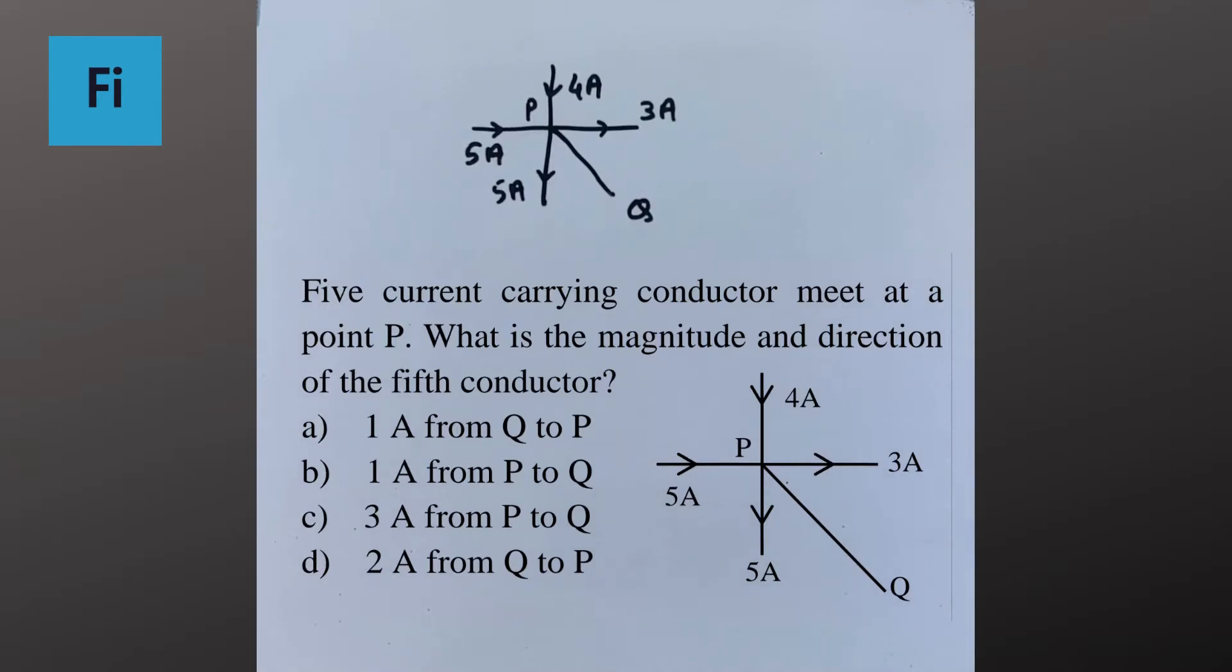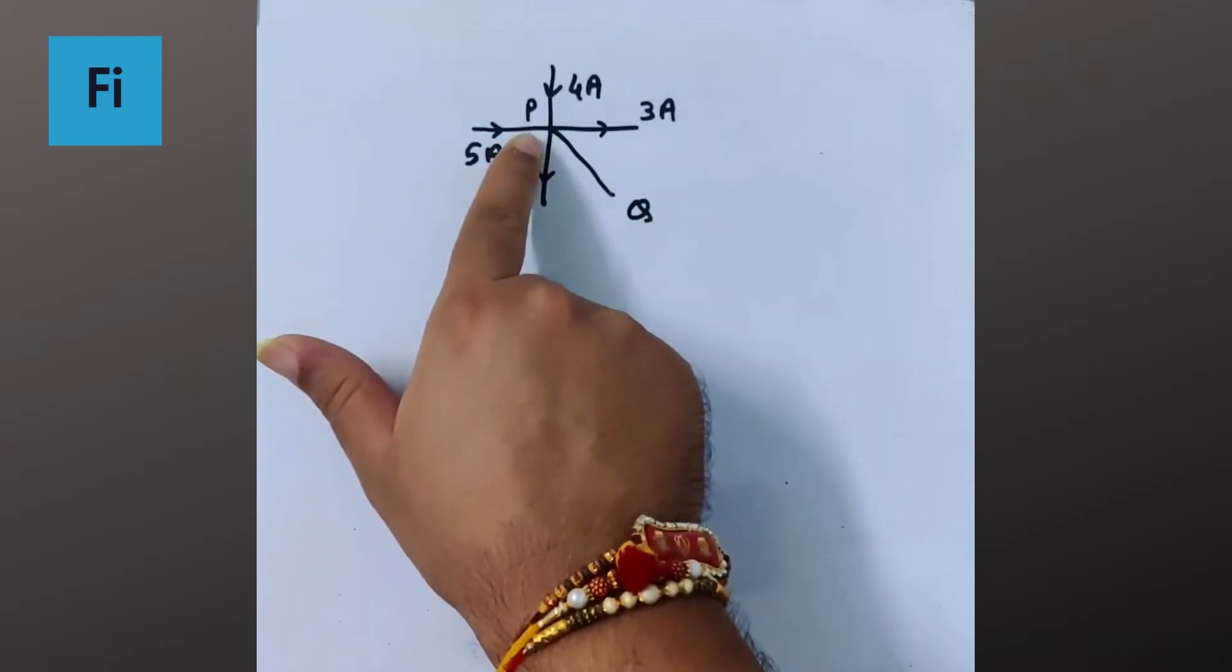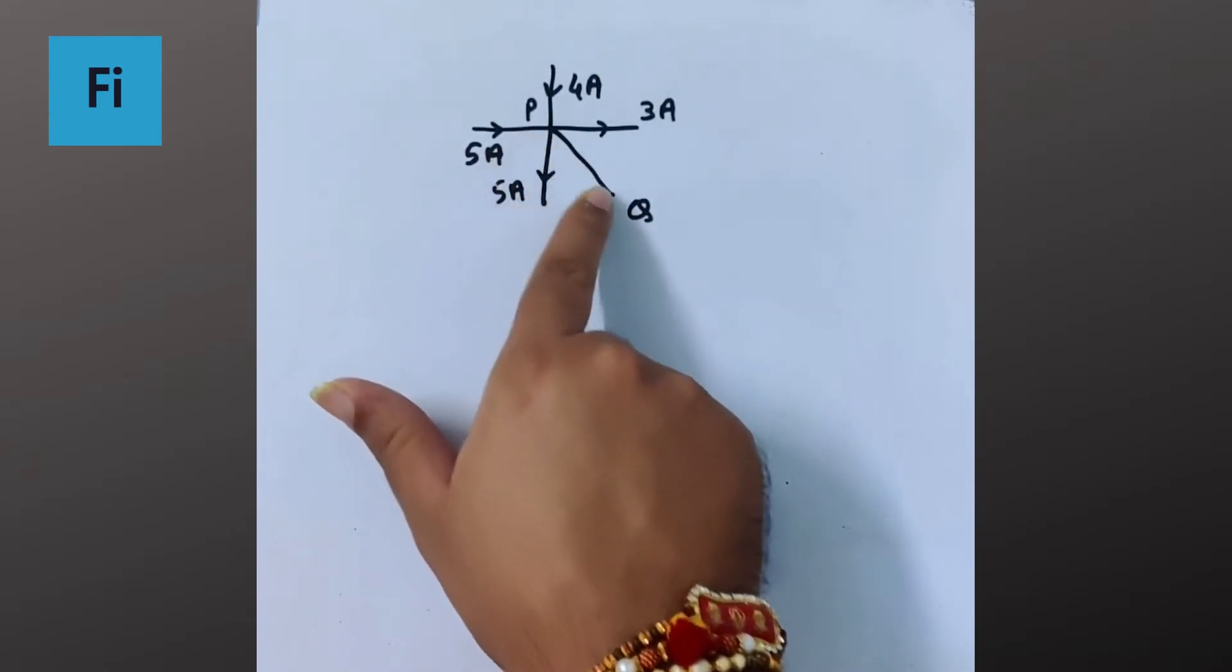The question says five current carrying conductors meet at a point P. What is the magnitude and direction of the fifth conductor? So these are the five conductors and they are meeting at point P. They want the current passing through this PQ.